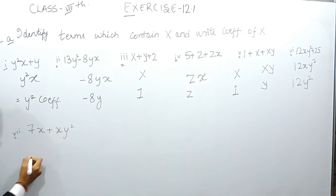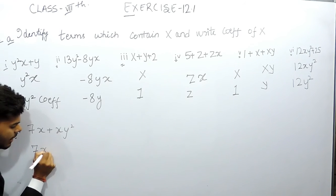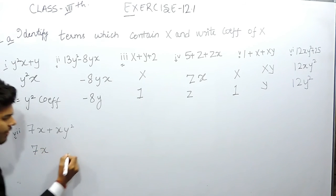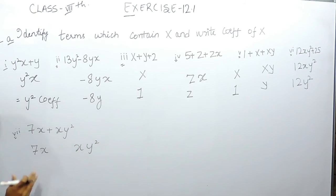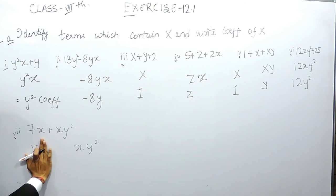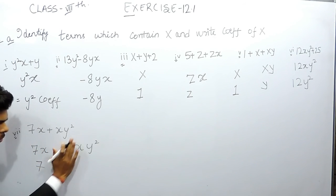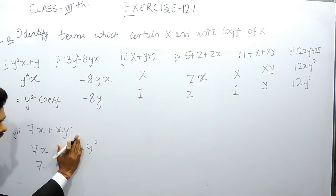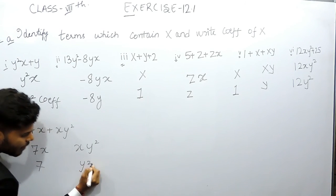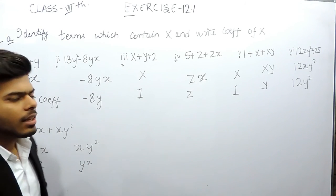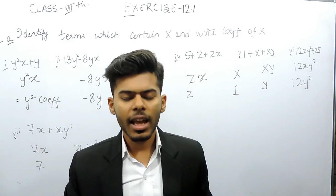In the last part we again have two terms having x: that is 7x and xy squared. We have to write the coefficient of x. Remove x from 7x and write the remaining term — that's 7. Remove x from xy squared and write the remaining term — that's y squared. So these are the coefficients of x. This is how you can solve this question. Thank you.